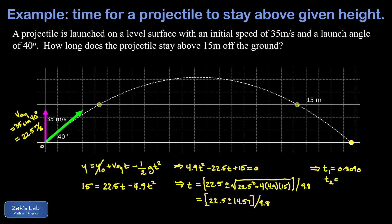Then we compute our second time. That's 22.5 plus 14.57 all divided by 9.8. And this gives us about 3.783 seconds.